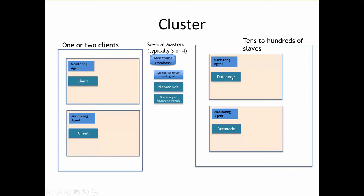The slave nodes, which will typically be tens to hundreds of them — here I am only showing two boxes representing two hosts — each one will need to have a data node process running on them.